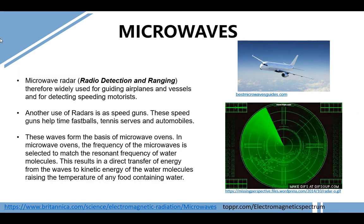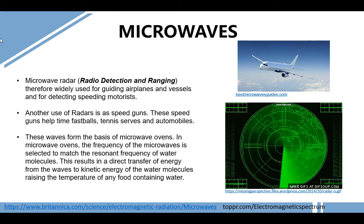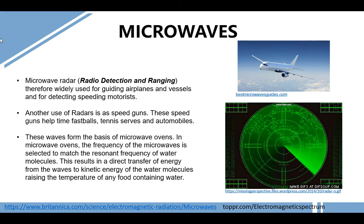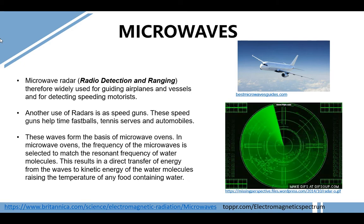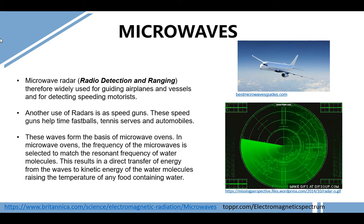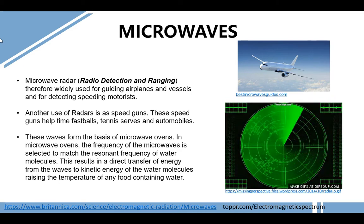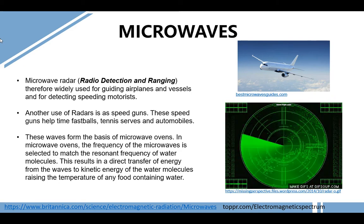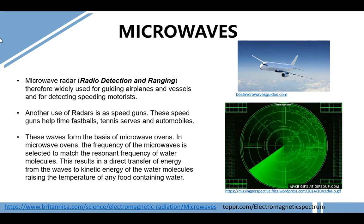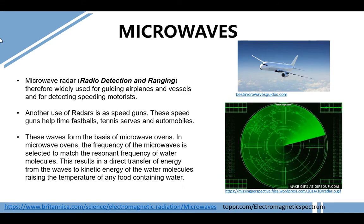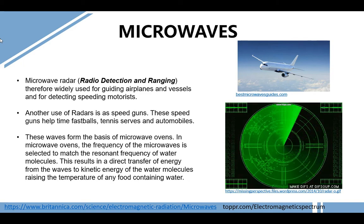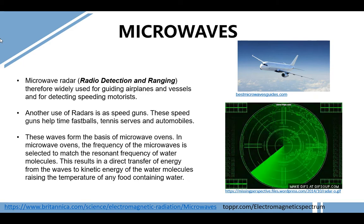An application of microwaves is microwave radar, or radio detection and ranging. Radar is widely used for guiding airplanes and vessels and for detecting speeding motorists. Another use of radar is speed guns. These speed guns help time fastballs, tennis serves, and automobiles.